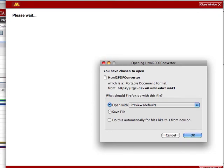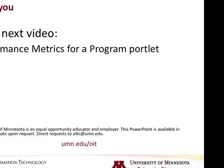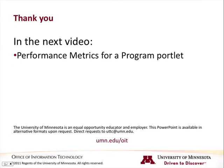Once the PDF has been generated, I can either print it or I can save it. This concludes the third video in the ITG Center Program Management Overview. In the next video, we will take a look at how to set up the performance metrics for a program portlet.